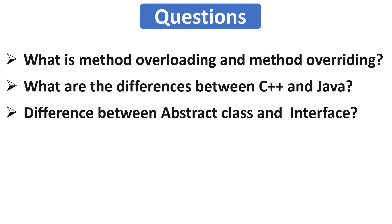Our next question is: what is the difference between abstract class and interface in Java? These are very important topics of core Java and interviewers often try to puzzle candidates between these two. First give a brief definition of abstract class and interface, then mention the differences, and also mention in which condition we should use each concept with a real-life example. A useful tip: point out new features from newer versions, as this impresses the interviewer. For example, in Java 7 you cannot have a static method in an interface, while in Java 8 you can.